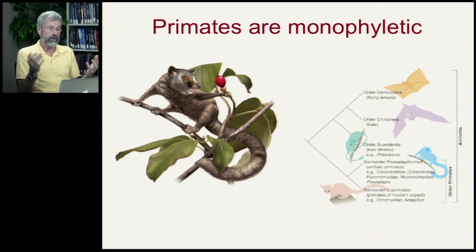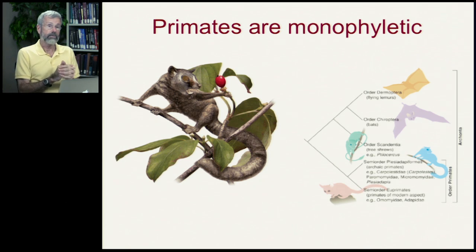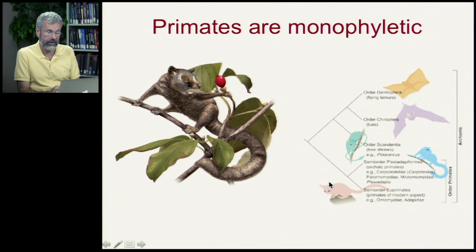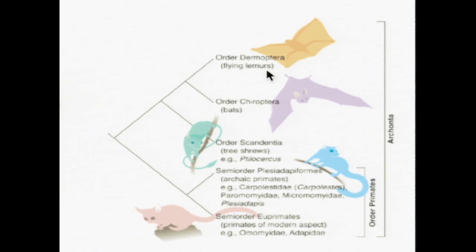Primates, which includes humans, are a good monophyletic classification. That term has been used in zoology for a long time and we still use it today — it's a perfectly good evolutionary unit. If we look at the family tree in the mammals, there are a series of orders: flying lemurs, bats, tree shrews, and then there's a lineage that gave rise to the extinct primates and then the modern primates.